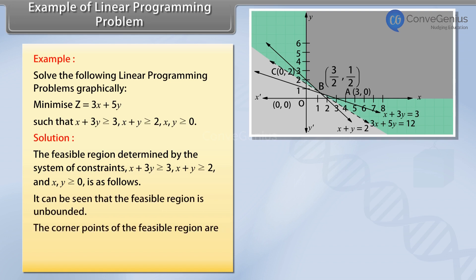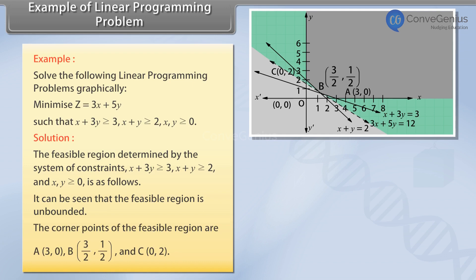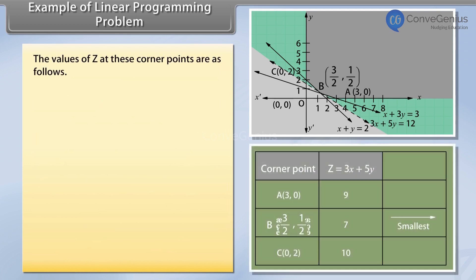The corner points of the feasible region are A(3, 0), B(3/2, 1/2), and C(0, 2). The values of Z at these corner points are as follows.